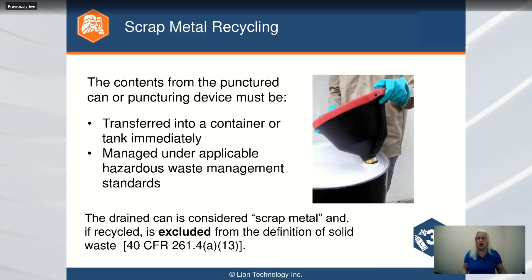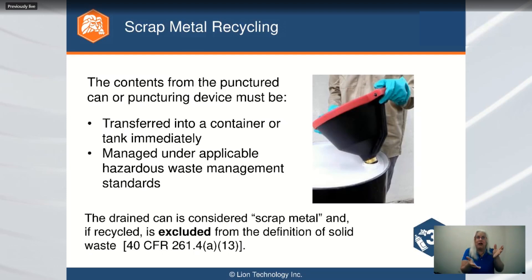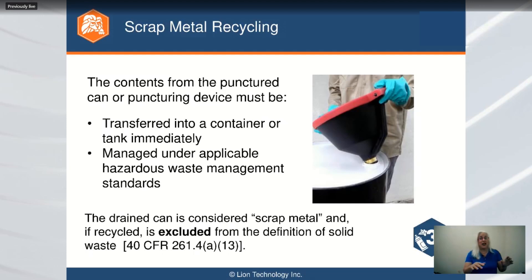The contents out of the can have to be managed under the regular hazardous waste rules. If you are gathering contents from a puncturing device, you can follow the satellite accumulation rules, since that's at or near the original point of generation. If it is a hazardous waste, write the words 'hazardous waste' on the container along with an indication of the hazard. You can accumulate up to 55 gallons. Once you reach that limit and start another container, mark the date and within three days ship it off-site or send it to your central accumulation area.